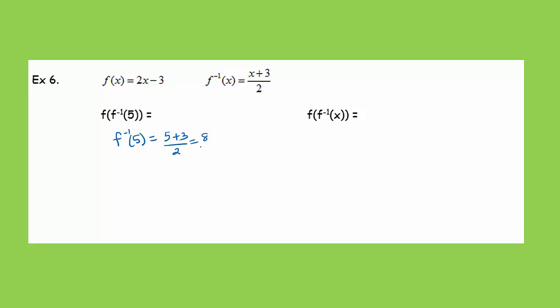So, let's do f inverse of 5. That would be 5 plus 3 over 2, so that turns into 8 over 2, which is 4. Now I'm supposed to do f of 4. I'll plug that into f of x. So, 2 times 4 minus 3 is 8 minus 3, which is 5.